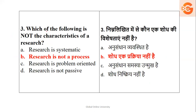Question number three: which of the following is NOT a characteristic of research? Research is systematic, research is problem-oriented — these we have studied. Research is not passive because research is always active. But 'research is not a process' is the correct answer for what is NOT a characteristic, because research IS a cyclic process — you have to follow certain steps. So option B is the right answer.